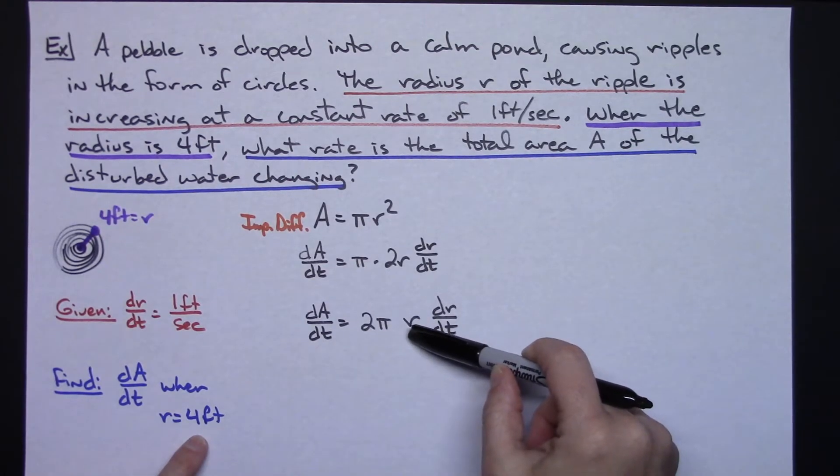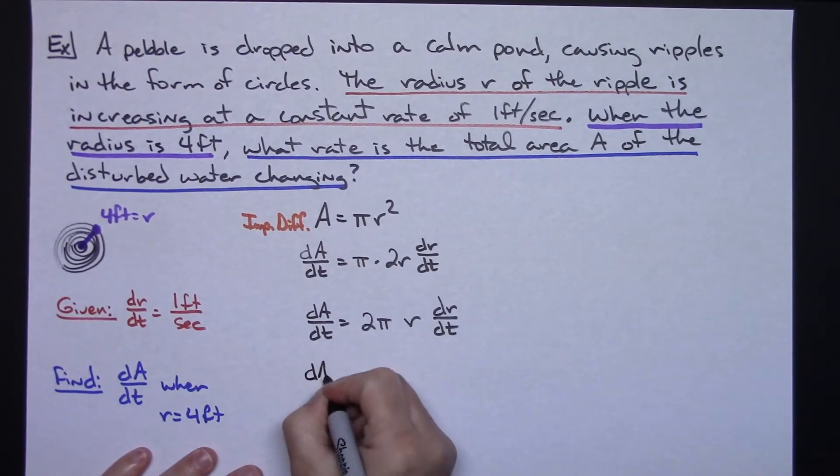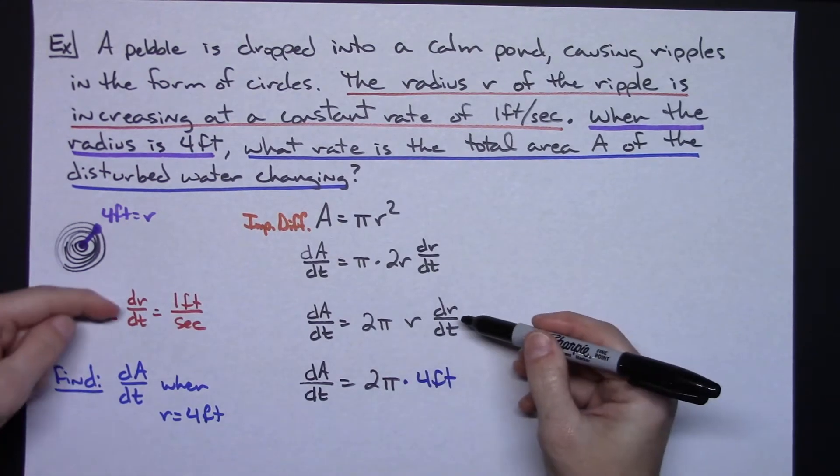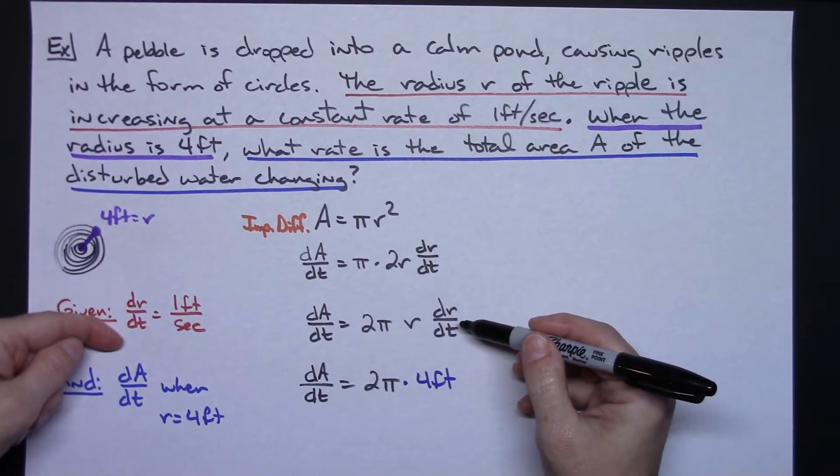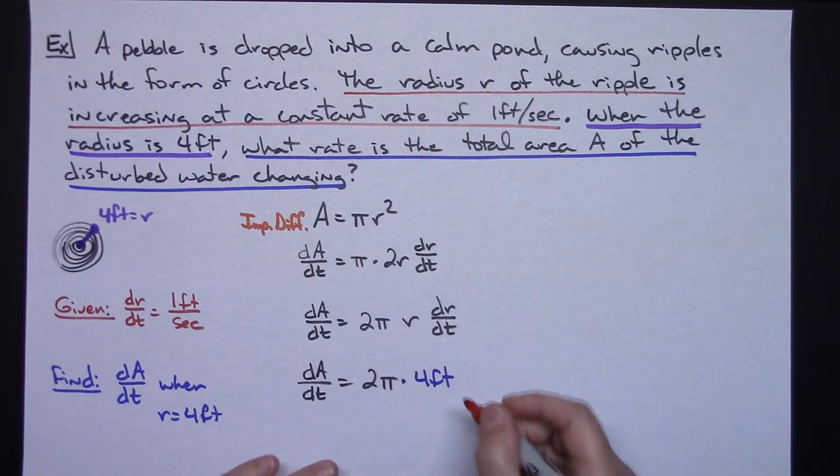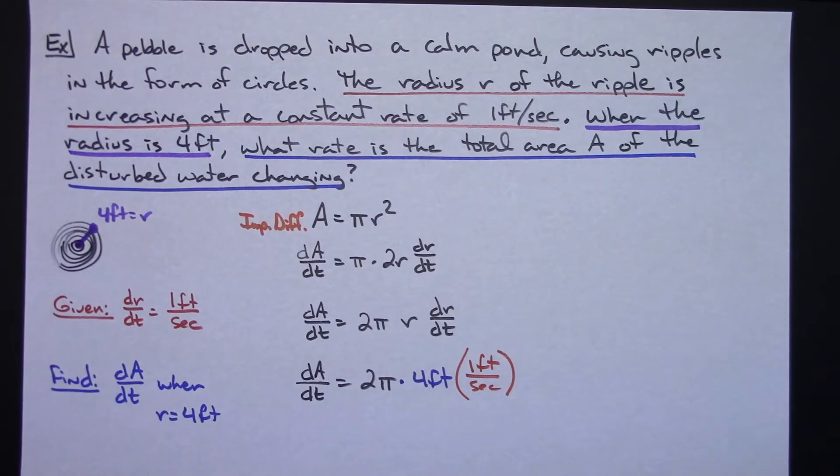I'm trying to find dA/dt when r equals 4. Well there's r so I can plug that in. So I'm trying to find dA/dt, the 2 pi is going to stay, I'm going to replace r with 4 feet and dr/dt. They gave me dr/dt as one foot per second so let's go ahead and plug that in as well. So then I'm going to have one foot per second.